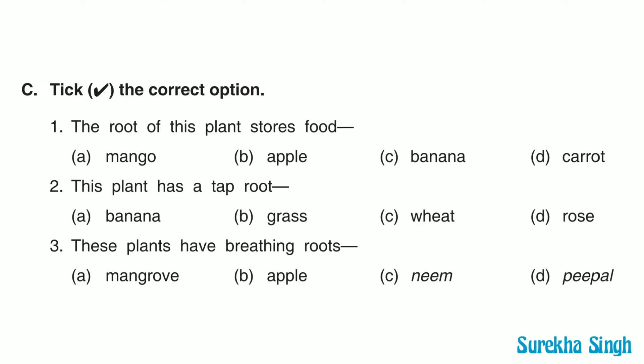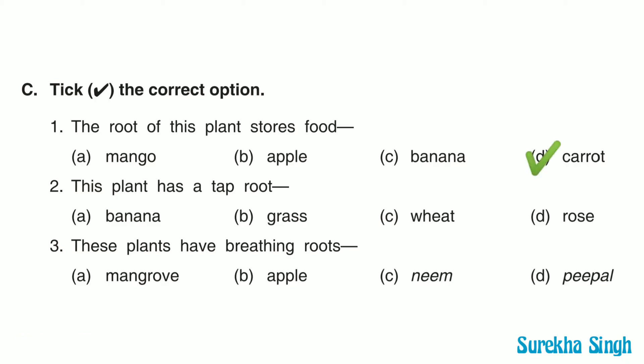Question C. Take the correct option. 1. The root of this plant stores food. Option A: Mango. Option B: Apple. Option C: Banana. Option D: Carrot. Here option D is correct. The root of the carrot plant stores food.